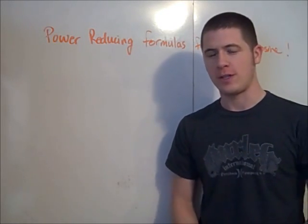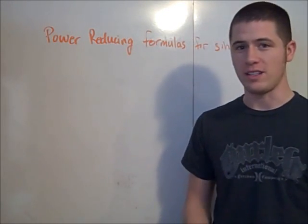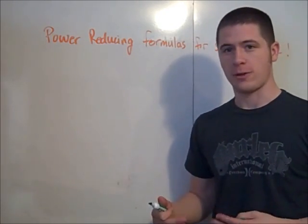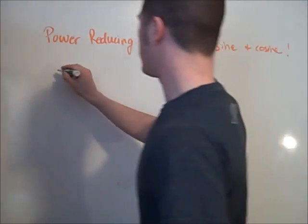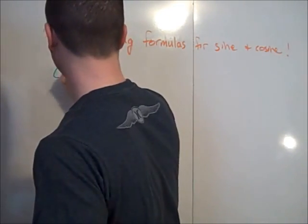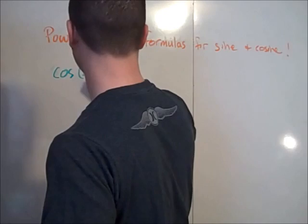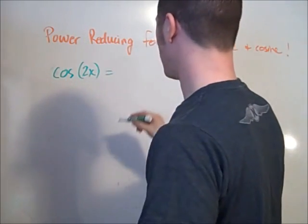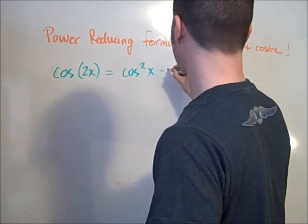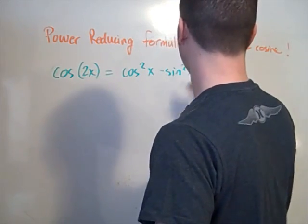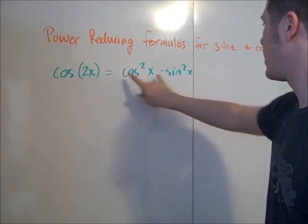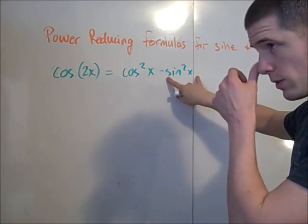To prove the power reducing formulas for sine and cosine, we start with the double angle formula for cosine — and in fact, we start with the double angle formula for cosine for both of them. So we know that cosine of 2x is equal to cosine squared x minus sine squared x. And so we're interested in what cosine squared x is equal to and what sine squared x is equal to.